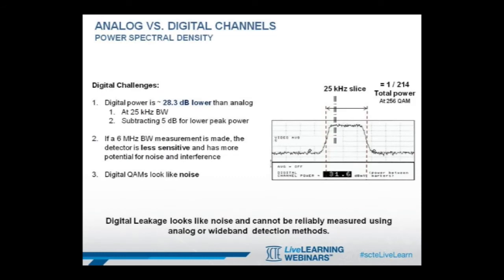But now, cable operators are moving to digital channels, which use quadrature amplitude modulation, or QAM. This introduces a new set of challenges to measure the resulting digital leakage. The digital QAM channels have their power spread over a 6 MHz channel bandwidth, as compared to analog channels, which have most of their power concentrated within the narrow 25 kHz bandwidth.